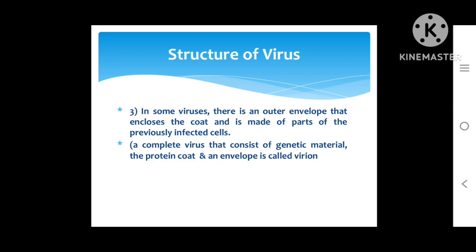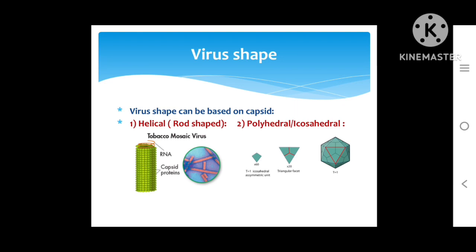Some viruses contain an outer envelope that encloses the capsid, made from parts of previously infected cells. A complete virus consisting of genetic material, protein coat, and — if present — an envelope is called a virion. The shape of a virus is based on its capsids, which are protein subunits.